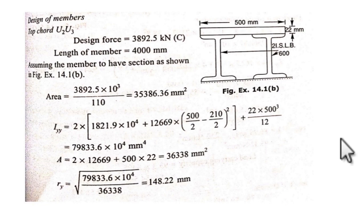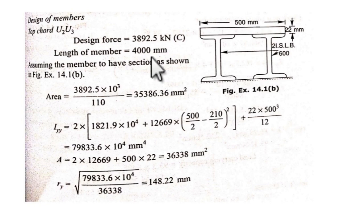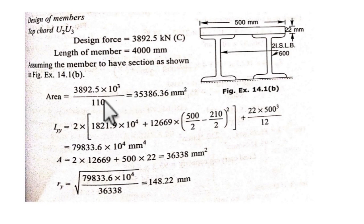In the previous video I discussed four members: one top chord member, one bottom chord member, one diagonal member, and one vertical member. The first is the top chord member carrying a compressive force with a design force of 3892.5 kN. The length of the member is 4000 mm. Now let us find the area required. We take sigma_ac as 110 — permissible stress in compression can be up to 150, but 110 is the usual value taken.